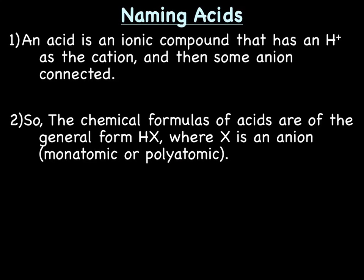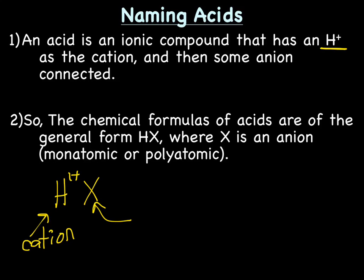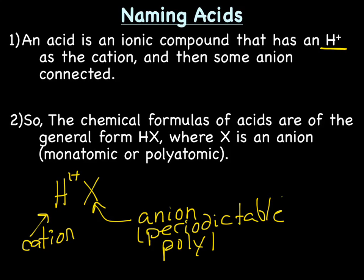Now let's name acids. An acid is an ionic compound that has H1+ as the cation, and then some anion connected. So the chemical formula for an acid in general form would be HX. H1+ is going to be the cation, and every acid starts with an H1+. That's how you know it's an acid — that's the definition of an acid. The X is some anion, and the anion can either be from the periodic table or it can be a polyatomic.